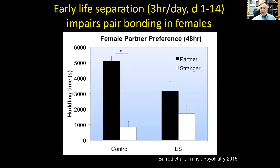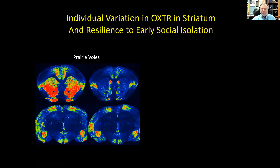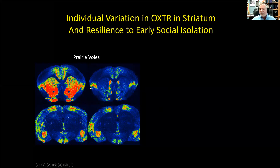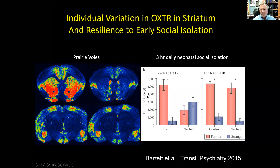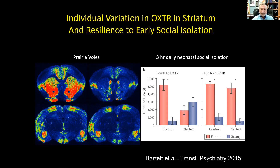Prairie voles not only show big species differences in oxytocin receptors but also a high degree of individual variation, particularly in the nucleus accumbens — not so much in other areas like the amygdala or VMH. It turns out that this variation predicts whether animals can form a bond. If they have a high density of receptors, animals can form bonds even if they experience neglect. If they have low levels of receptors, these animals can't form bonds later in life if they experience neglect. Social isolation isn't changing the receptor density — animals are born with either high or low levels.